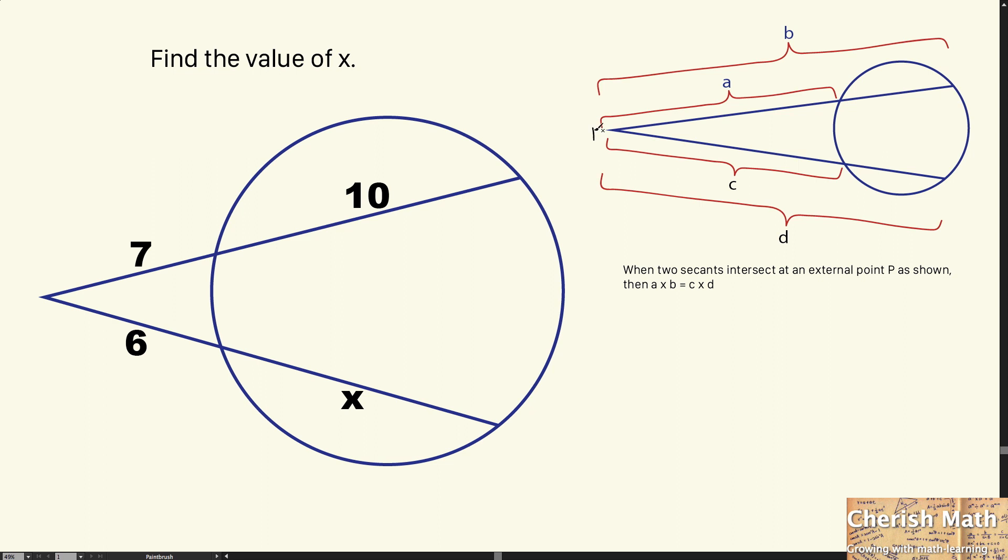This is the external point P. And when we're looking at it, the length of the A multiplied by the length of the B is equal to the length of the C here multiplied by the entire length of the D. And this is the rule.